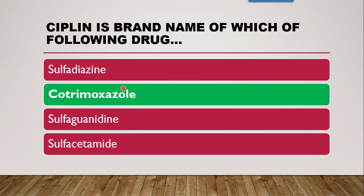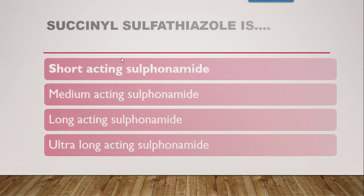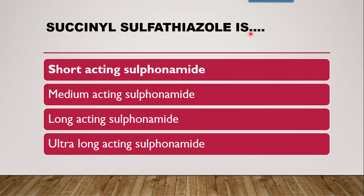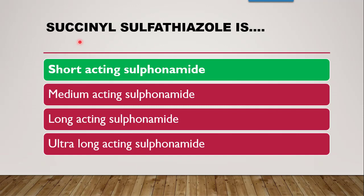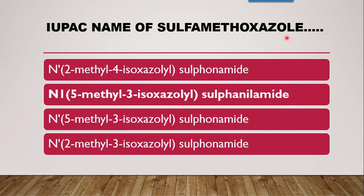Next question: succinyl sulfathiazole is — short acting, medium acting, long acting, or ultra long acting? The correct answer is short acting sulfonamide. Next question is the IUPAC name of sulfamethoxazole. Methoxazole contains an isoxazole ring. For detailed IUPAC explanation, refer to the link in the description box for the sulfamethoxazole video.